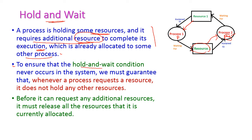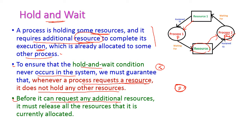To ensure the hold and wait condition never occurs in the system, we must guarantee that whenever a process requests a resource, it does not hold any other resources. If a process wants to request a resource, it should not be holding any other resources. Before it can request any additional resource, it must release all currently allocated resources. If the process wants to access resource 2, it must also release resource 1. Only when both resources are free can the process access them. By this way, we can overcome the hold and wait condition.